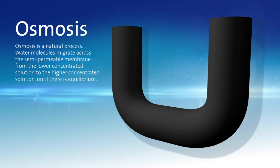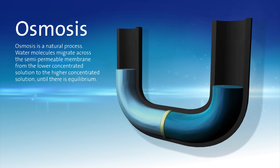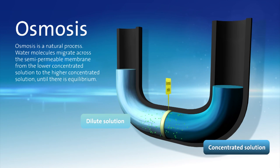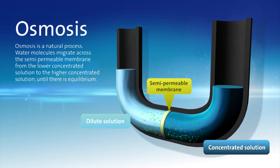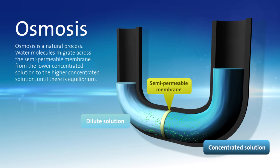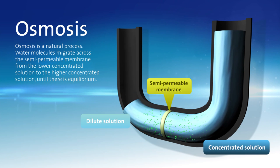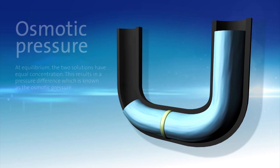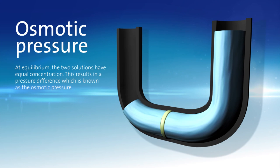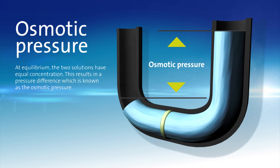Osmosis is a natural process. Water molecules migrate across the semi-permeable membrane from the lower concentrated solution to the higher concentrated solution until there is an equilibrium. At equilibrium, the two solutions have equal concentration. This results in a pressure difference, which is known as the osmotic pressure.